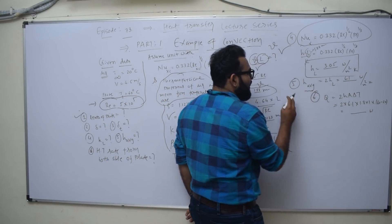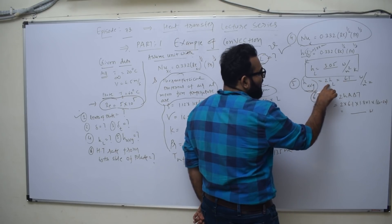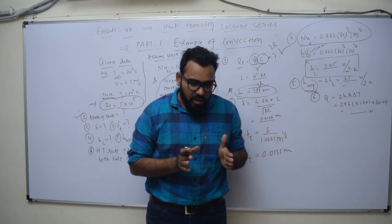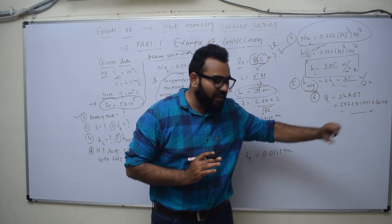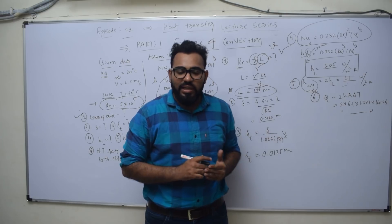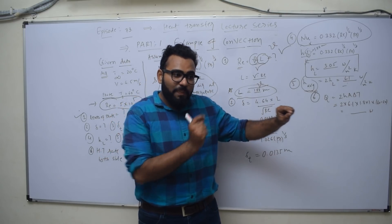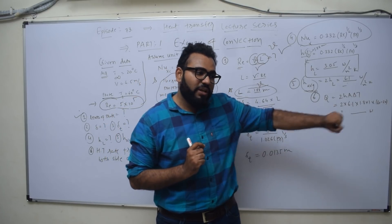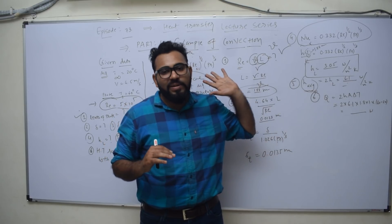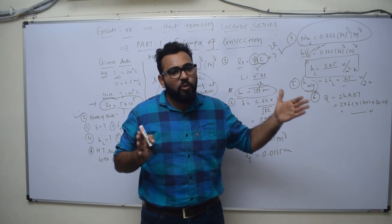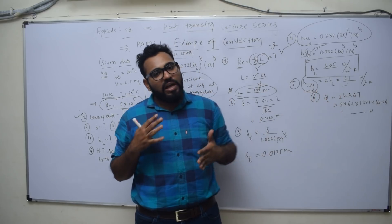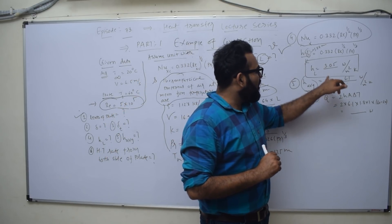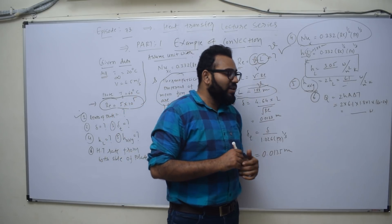Now we need to find the average heat transfer coefficient. The average heat transfer coefficient is simply twice the local value: h_avg = 2 × h_local. To understand the difference: if the full plate length is 2 m and you find h at the full length, that gives h_average. But if you find h at a particular point like 0.5 m or 1.3 m within the plate, that is the local heat transfer coefficient.